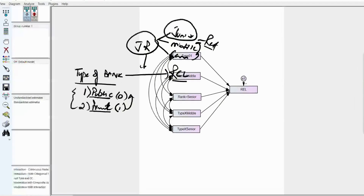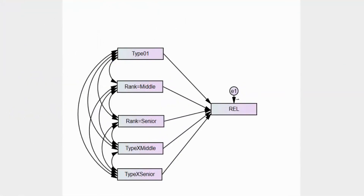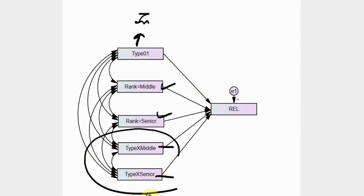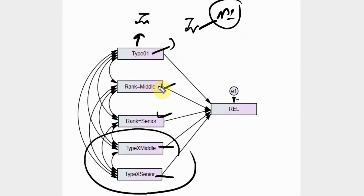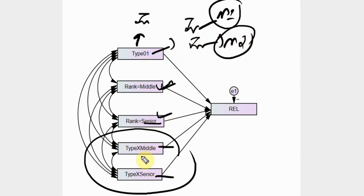Once there are categories in your variable, you have one as a reference category. In this case, junior is our reference category and the results are compared to it. Since we have only two categories for type of bank, private will be compared to public, so I am taking public as a reference category. For moderation we need interaction terms, and the interaction is created between the IV and each category of the moderator — but not with the reference category. Leave the reference category out, then create an interaction between the IV and moderator category one, and then IV and moderator category two.